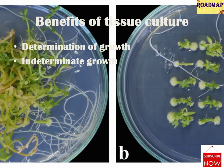Determinate growth is characterized by cessation of growth as plants attain a certain size and shape — for example, leaves, flowers, and fruits. Indeterminate growth refers to the continuous growth of roots and stems under suitable conditions, which is possible due to the presence of meristems that can proliferate continuously.